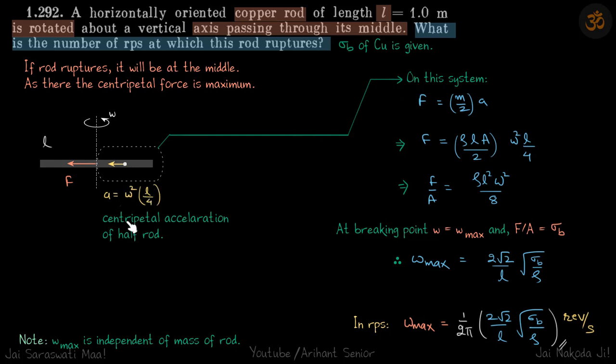So centripetal acceleration of this half rod will therefore be omega square into L by 4. So this distance is L by 4. So on this system, the external force is F, which we need to find. Sorry, we don't need to find, but we know that F upon A at that point has reached its breaking stress.